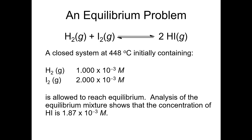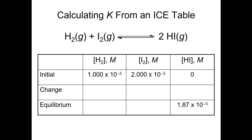To solve this problem we use an ICE table — Initial, Change, Equilibrium. I've written the balanced equation and populated the ICE table with the given data: initial H₂ = 1×10⁻³ M, initial I₂ = 2×10⁻³ M, and initial HI = 0. The final HI concentration is 1.87×10⁻³ M, so the change in HI is +1.87×10⁻³. Because HI has a coefficient of 2 and H₂ and I₂ each have a coefficient of 1, their changes are exactly half: −9.35×10⁻⁴ for each reactant.